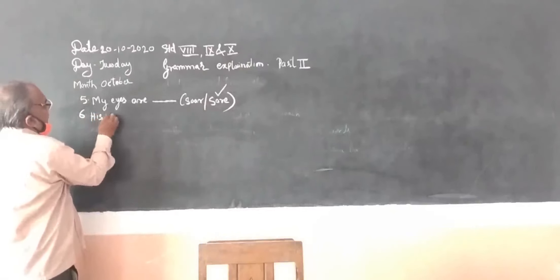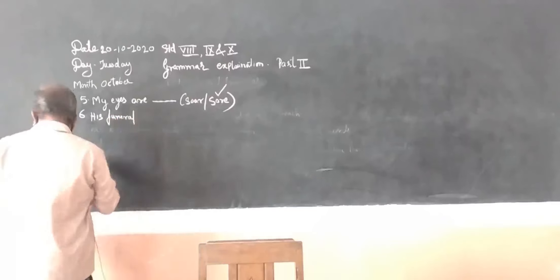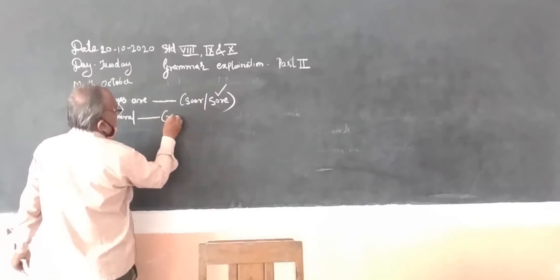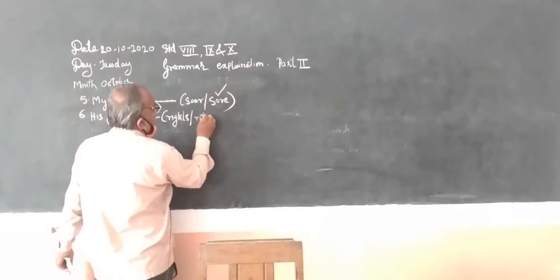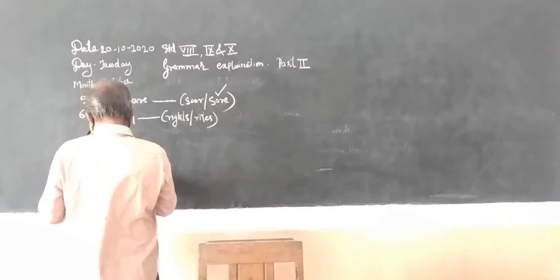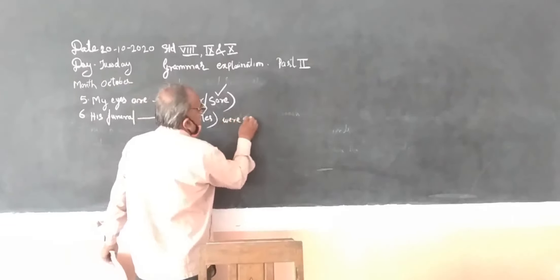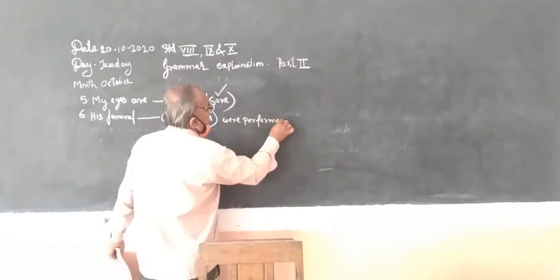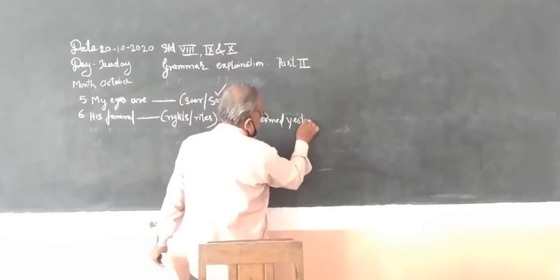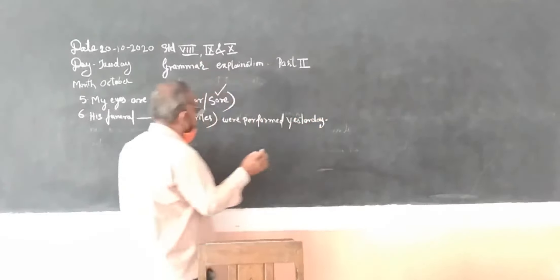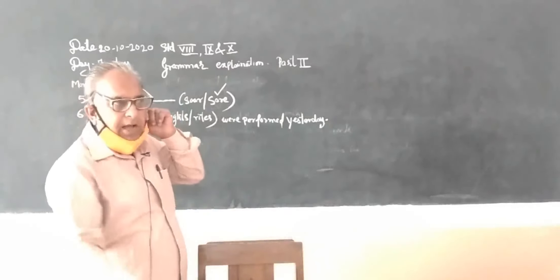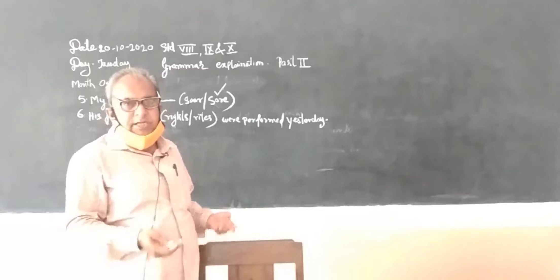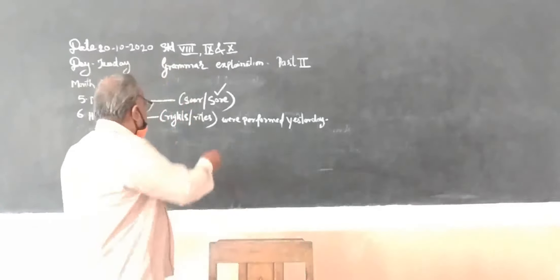Number six: his funeral rights, R-I-G-H-T-S oblique R-I-T-E-S rites, were performed yesterday. Now which rights we have to use is funeral rites means after death, one function, these functions are called funeral rites. So these rites we have to use.